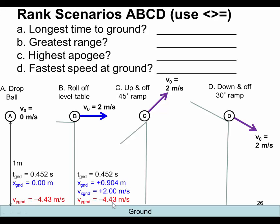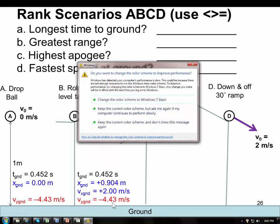The question was, how do we figure out exactly what happens with C and D? We can make some pretty good guesses on some of these, like the longest time to the ground and the highest apogee and the fastest speed at the ground. But the greatest range is a difficult guess to make.